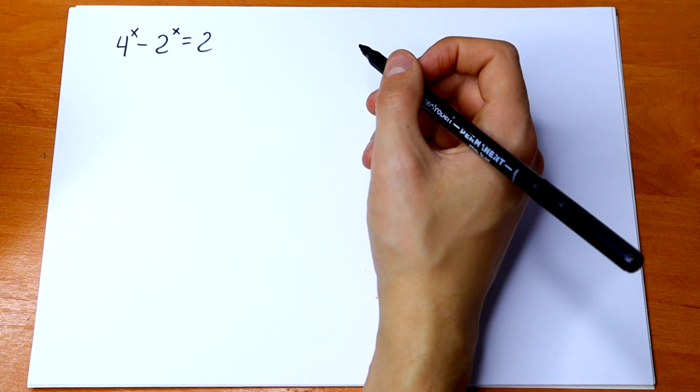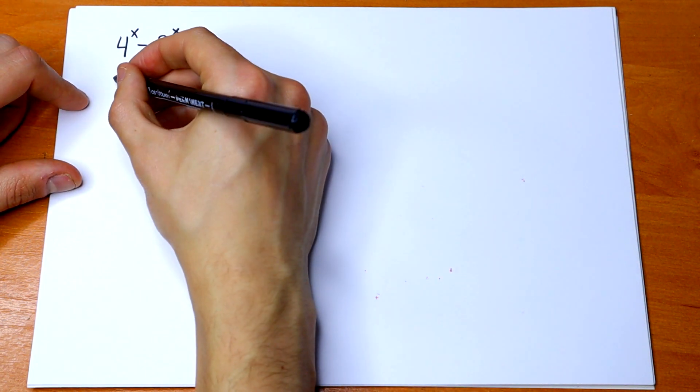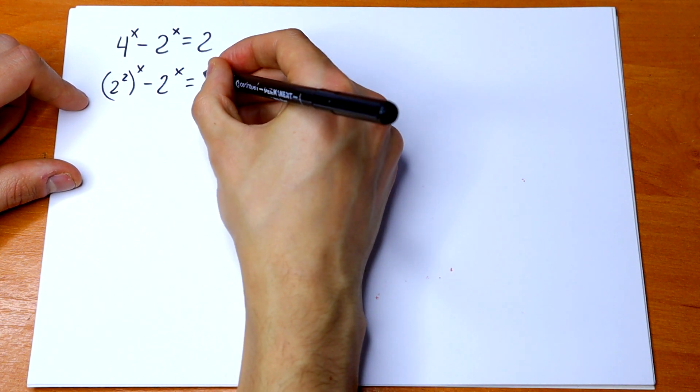Let's try to solve this. We can represent 4 as 2 squared, so let's do this. We have (2²)^x - 2^x = 2.